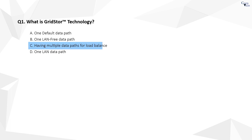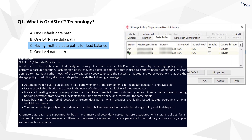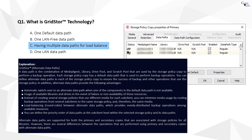The correct answer is C. GridStore technology provides the ability to configure multiple data paths to storage within a storage policy copy. Having multiple data paths enables the administrator to route data from multiple clients to storage on the best path available, reroute data should a data path resource fail, or load balance data movement across multiple paths for performance.